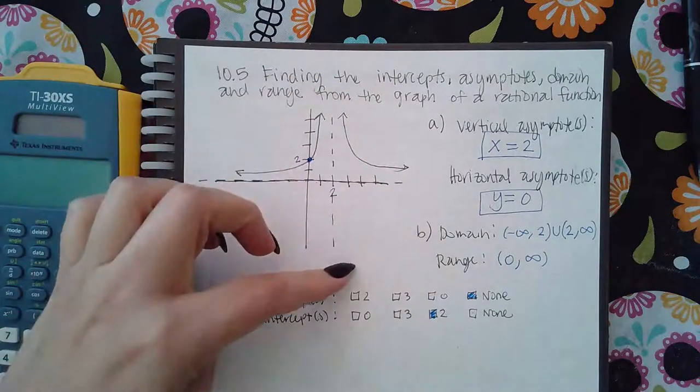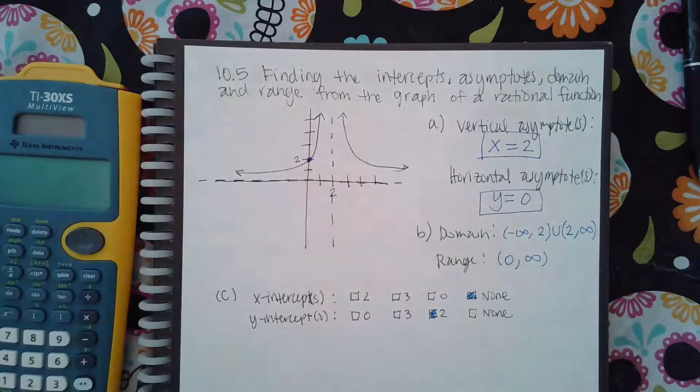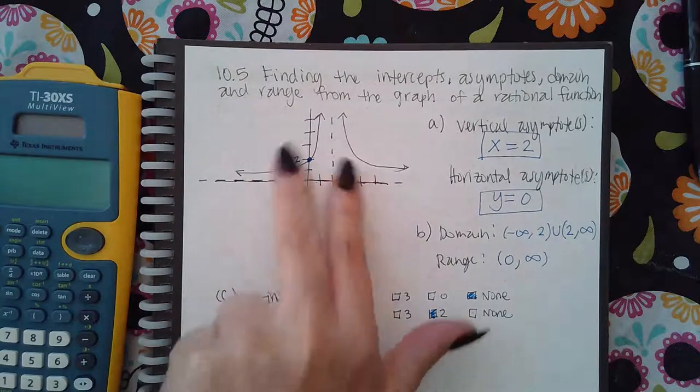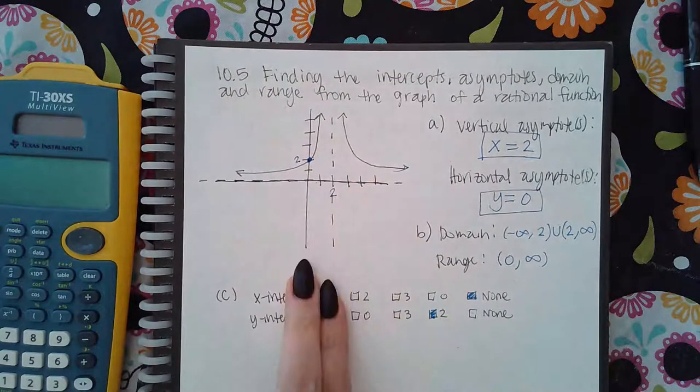But if both of them are up top or both of them are at the bottom, then you're only going to have half of a interval, just one segment of the interval, not two.